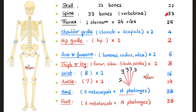Adding it all up: 22 plus 33 plus 25 plus 4 plus 2 plus 6 plus 8 plus 16 plus 14 plus 38 plus 38 gives a total of 206 bones in the typical adult human. However, neonates have more bones because some have not fused together yet. As you grow, some bones fuse together and you end up with 206 bones total as an adult.